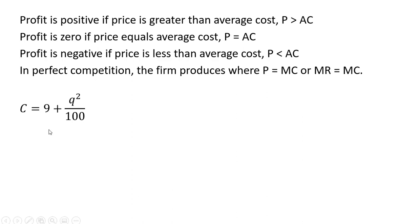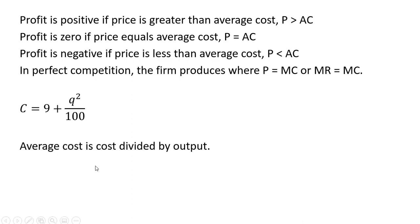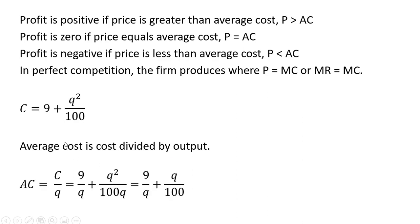Here's our cost function and we're going to get average cost by dividing the cost function by output Q. Dividing every component of the cost function by Q, we end up with 9 divided by Q plus Q divided by 100. So that is a firm's cost per unit — average cost.